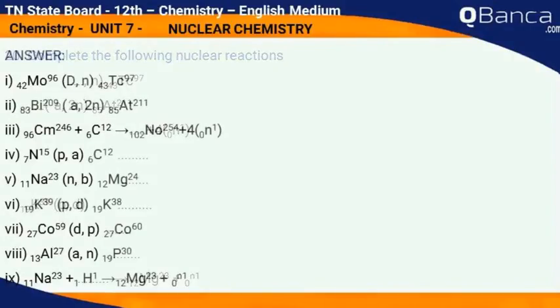Answer: i) Mo-96-42, d, n gives Tc-97-43, Bi-209-83; ii) a, 2n At-211-85; iii) Cm-246-96 plus C-12-6 gives No-254-102 plus 4 N-0-1; iv) N-15-7, p, alpha C-12-6;